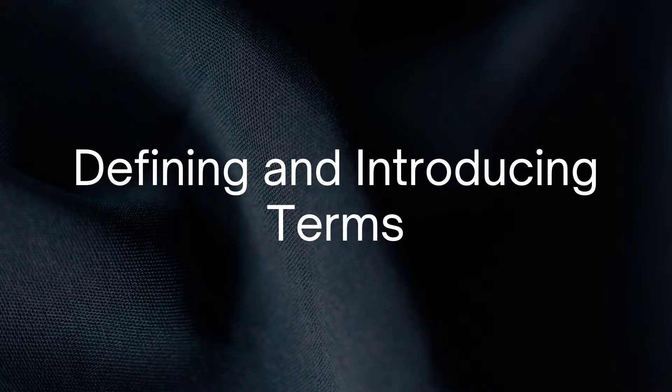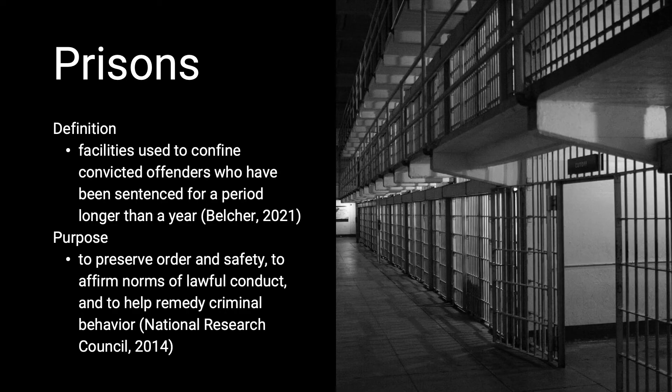The first section I will now be introducing and defining terms you will hear very often throughout the rest of this presentation. The first of these terms is prisons, defined as facilities used to confine convicted offenders who have been sentenced for a period longer than a year. Prisons are known as long-term facilities operated by the state and federal governments, used to preserve order and safety, to affirm norms of lawful conduct, and to help remedy criminal behavior in society.